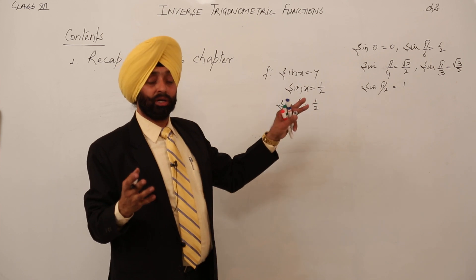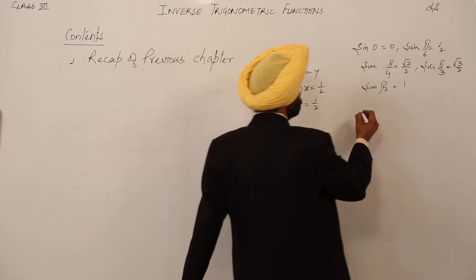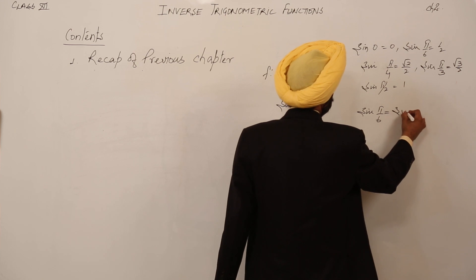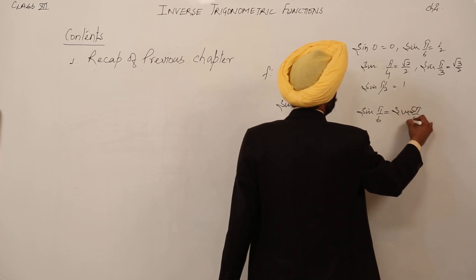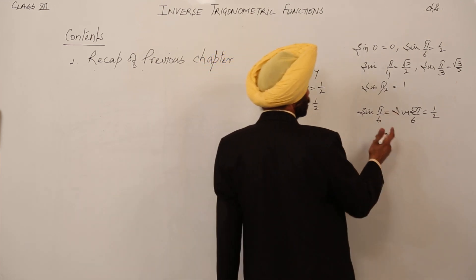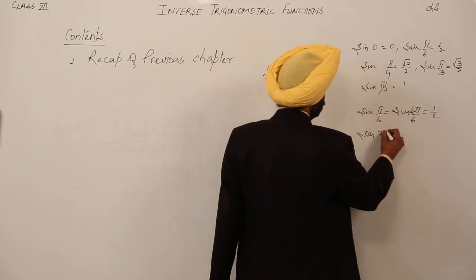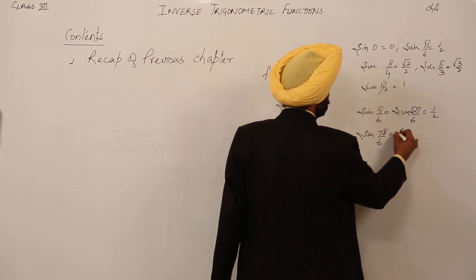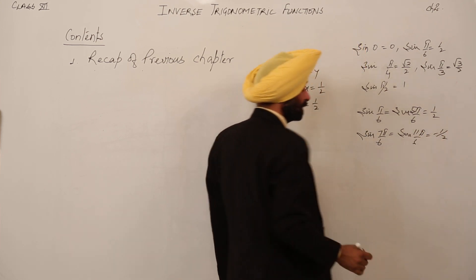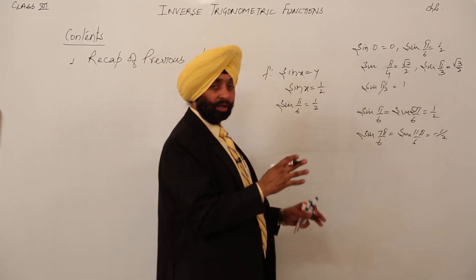Now let's write what you learned in class 11th. In 11th, we had many values. sin(π/6) = sin(5π/6), both equal 1/2, because in the second quadrant, sin is positive. Then sin(7π/6) = sin(11π/6) = −1/2, in the third and fourth quadrant. Moving to different values — I just want to show you whether it is one-one or not.